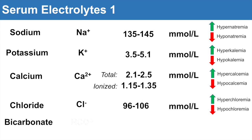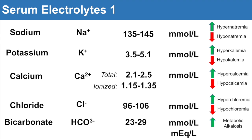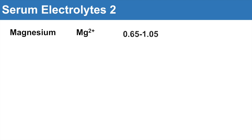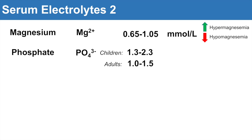Bicarbonate, HCO3 minus, is very important. The range is about 23 to 29 millimoles per liter or milliequivalents per liter — a very consistent range. Anything higher typically suggests metabolic alkalosis. Other electrolytes include magnesium, with a range of 0.65 to 1.05 millimoles per liter — hypermagnesemia if higher, hypomagnesemia if lower. Phosphate is age-dependent: in children the range is 1.3 to 2.3, and in adults it's 1 to 1.5 millimoles per liter. Anything higher is hyperphosphatemia, and anything lower is hypophosphatemia.